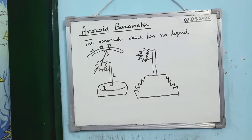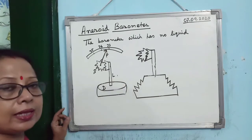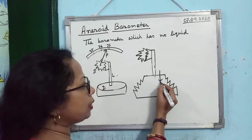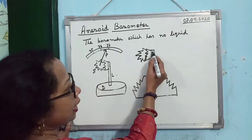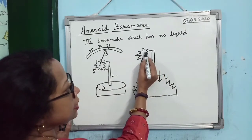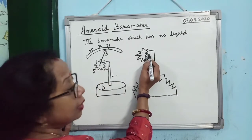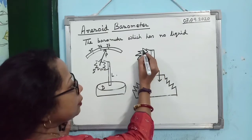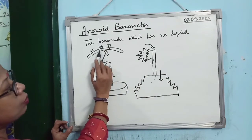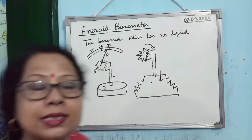How does it work? When outside pressure increases, the diaphragm is pushed down, the rod moves down, the comb moves down, and since the wheel and comb are coupled, the wheel rotates in one direction — the pointer moves on the circular scale indicating that atmospheric pressure is increasing.